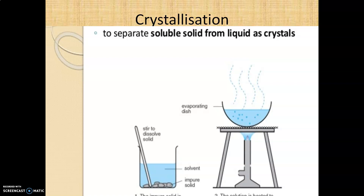Pure sugar is obtained from its solution in water by the process of crystallization. When a sugar solution is heated, water evaporates and as the solution is cooled, the dissolved sugar starts separating out in the form of crystals. You get a thick paste and the sugar keeps separating, forming crystals, giving you pure sugar. Crystallization is specifically done for separating sugar from water.